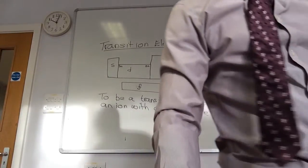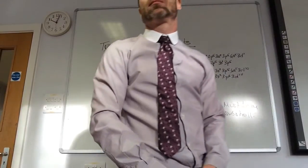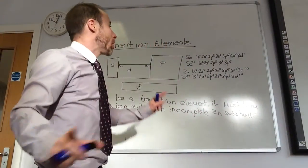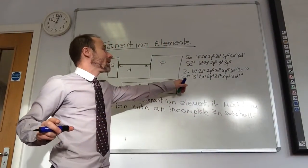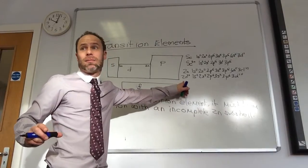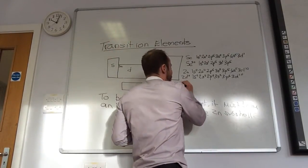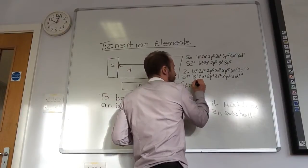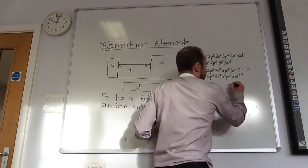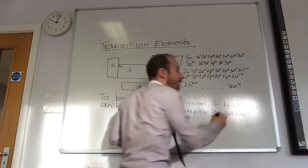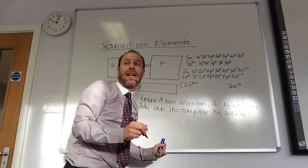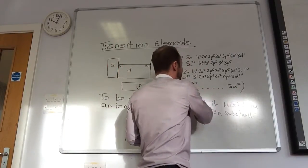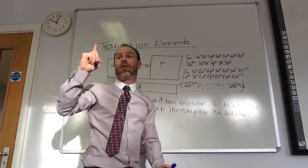Would it be a transition element if one of its ions did have a complete—yeah, so, let's say Zinc forms Zn3+. Just quickly. Yeah, can I just do the problem? If Zn3+ would be 3d9, then he would be part of the gang. But, because he doesn't, he's only got to be able to form one ion. That's it.